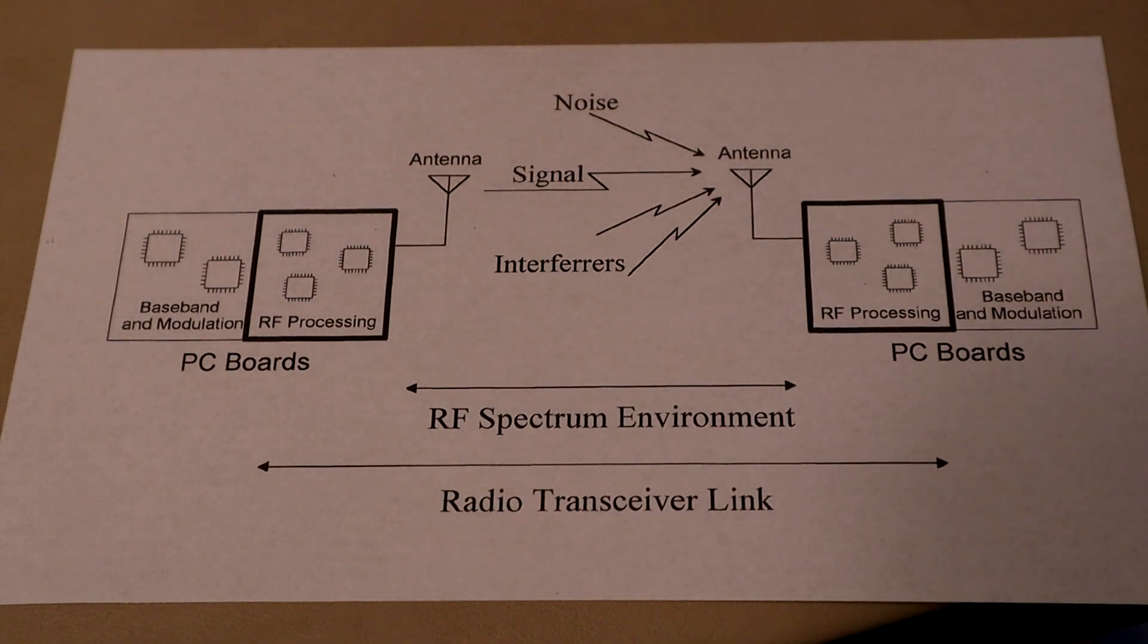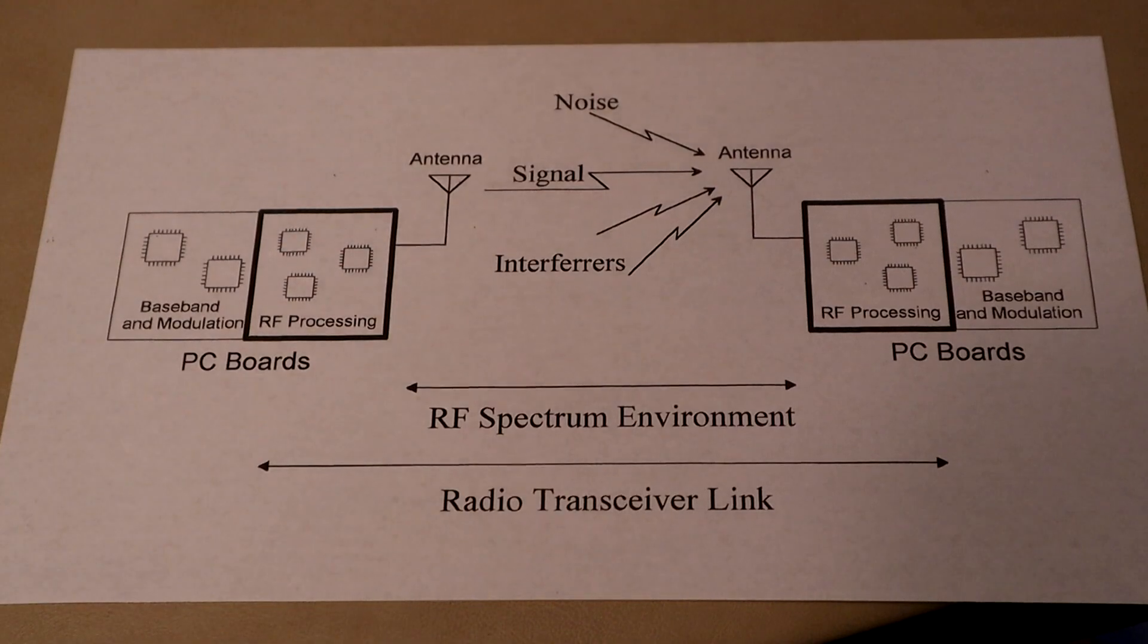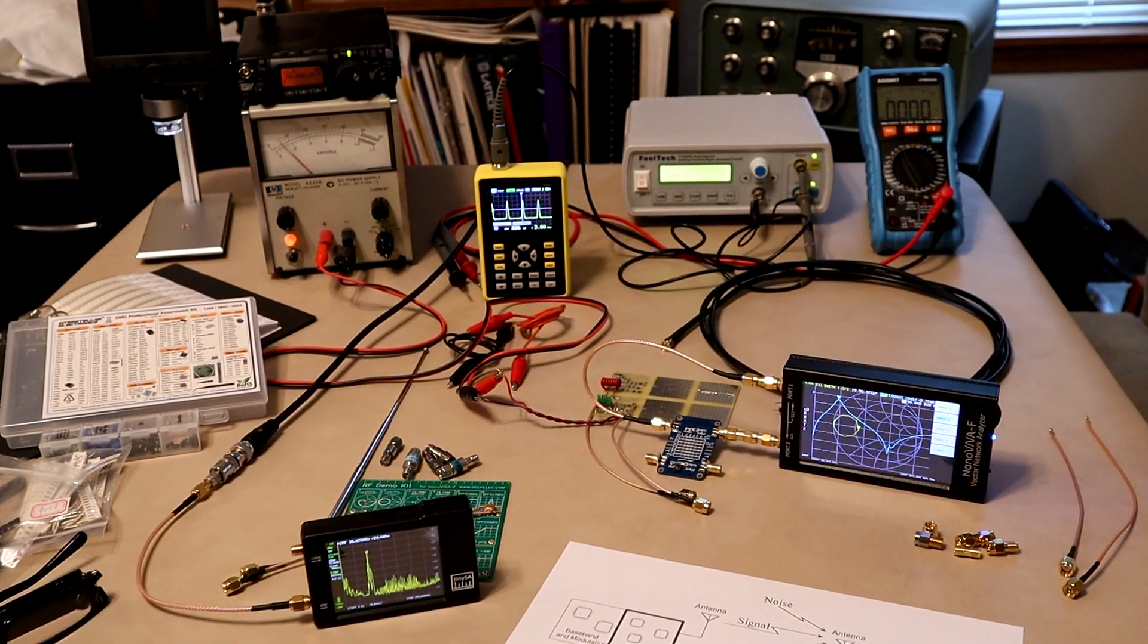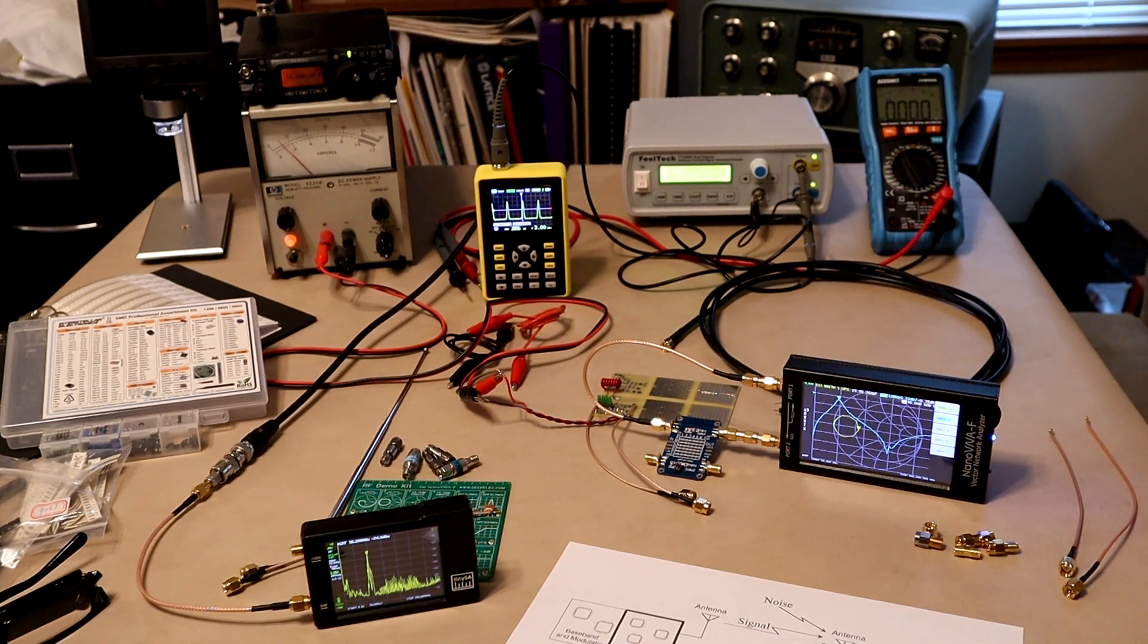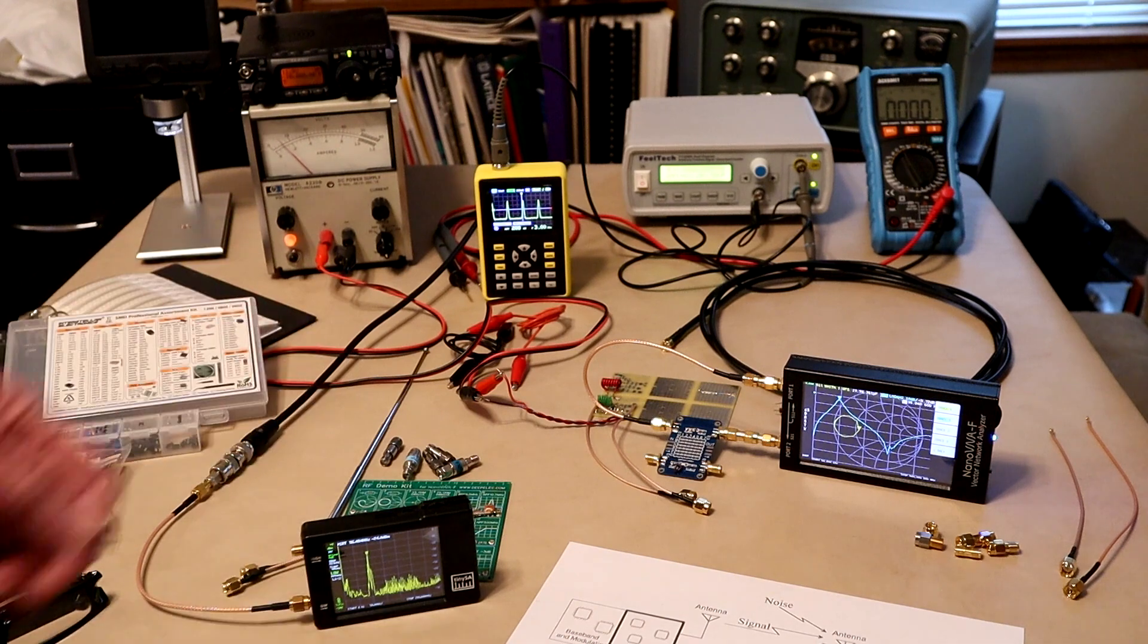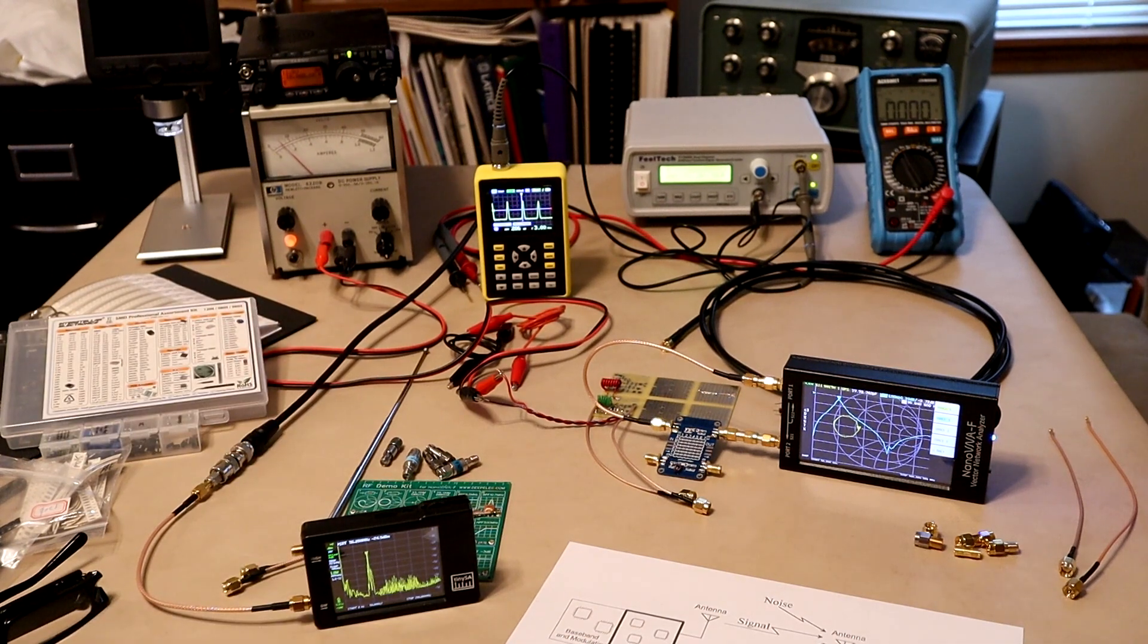But our goal in this video is going to be a little different. We're going to use the tiny SA and the nano VNA to help illustrate how radio actually works. Now obviously that's a very aggressive goal and there's no way in a short video like this that we can explain in detail how radio works. However, what we're going to be presenting today is walking through some of the test equipment that you can now buy for quite inexpensive prices and put together your own RF lab and design and build radio receivers for example.